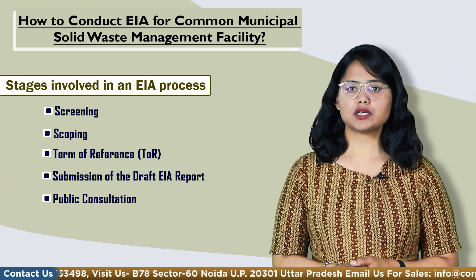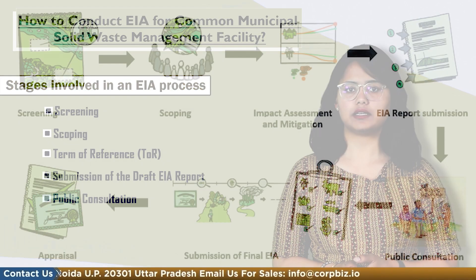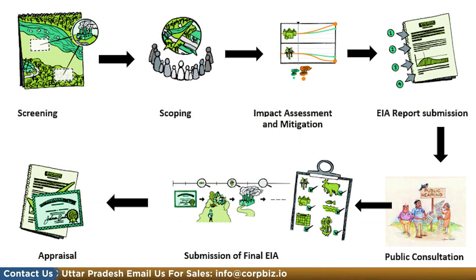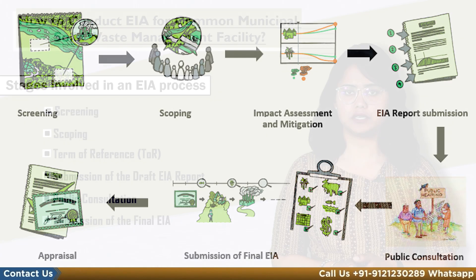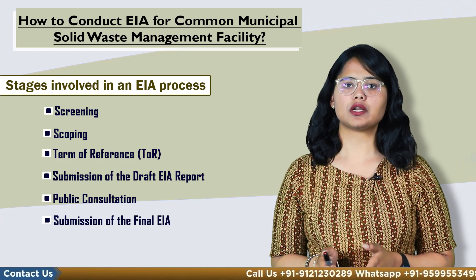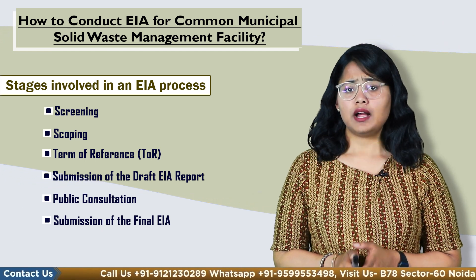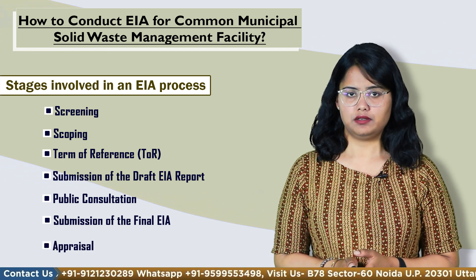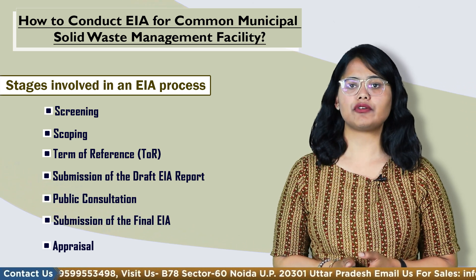Next is Public Consultation, which plays a major role in the entire EIA process. A public hearing is conducted at the project site and the proposal is presented in front of the public for their opinions and views. This is followed by the Submission of the Final EIA, incorporating public hearing minutes issued by the Pollution Control Board, submitted to the central or state level for review. The last stage is Appraisal, which decides whether the environmental impact assessment is satisfactory or not.